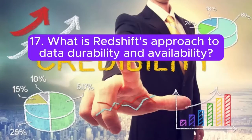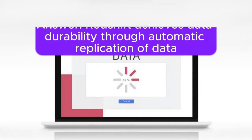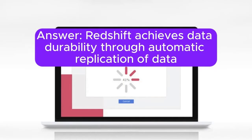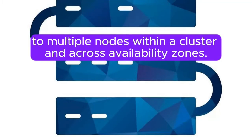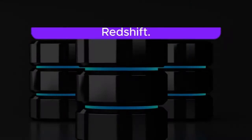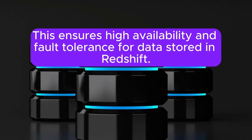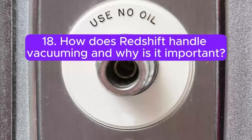Question 17: What is Redshift's approach to data durability and availability? Answer: Redshift achieves data durability through automatic replication of data to multiple nodes within a cluster and across availability zones. This ensures high availability and fault tolerance for data stored in Redshift.